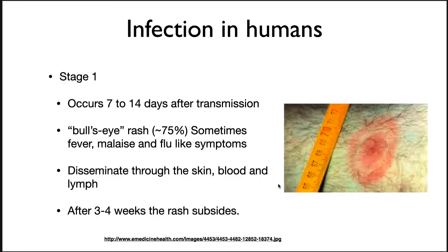Infection begins with the bite of the tick containing B. burgdorferi. In humans, the disease has three stages. In the first, which occurs 7 to 14 days after the tick bite, a localized infection near the tick bite often results in a distinctive, expanding rash — but not always, and in fact this can get missed a lot of the time. As the rash develops, it may take on a bullseye appearance, which is a clear indication of the illness. Fever, malaise, and flu-like symptoms may accompany the rash in a majority of patients. The microbe disseminates throughout the skin, blood, and lymph, and after about 3 to 4 weeks the rash subsides. This dissemination is assisted by the corkscrew morphology of the organism.